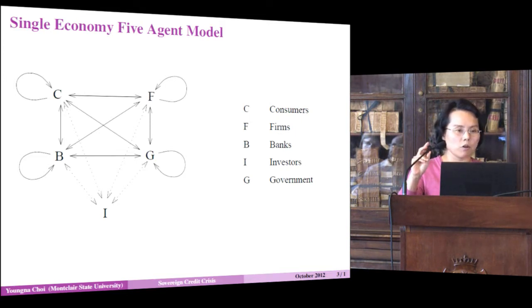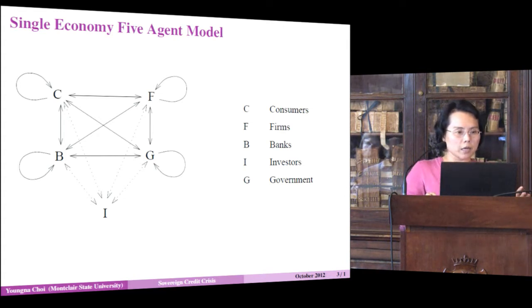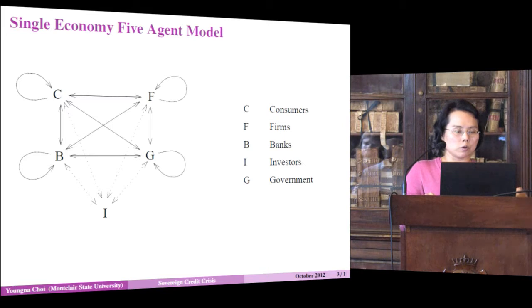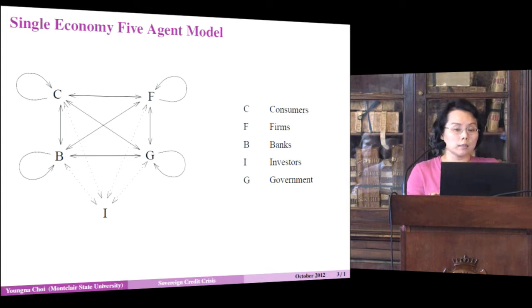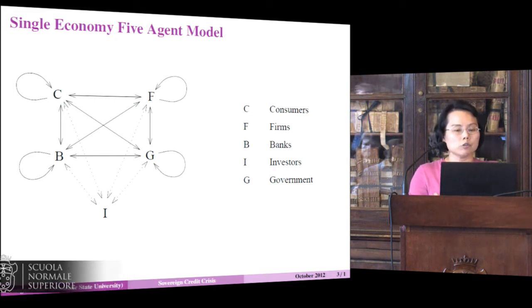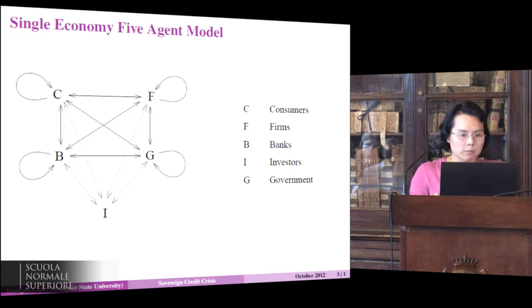I'd like to start with this flow of funds. In the case of a single economy, we divide an economy into aggregates called agents — what you can call economic sectors. The core elements are: C for consumers, F for firms, B for banks including insurance companies, I for investors meaning portfolio managers like mutual fund and pension fund, and G for government. They are core elements — remove one and the whole economy collapses. There are flows of funds between each pair of agents.